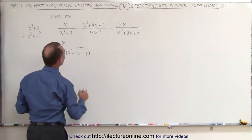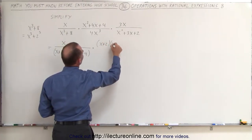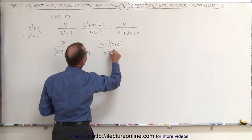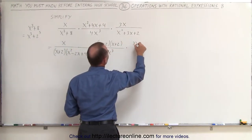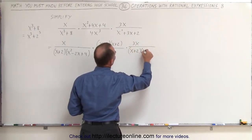Next, we have to simplify the numerator, or at least factor the numerator. This can be written as x plus 2 times x plus 2, divided by 4x cubed. And finally, here we can see the denominator can also be factored. This is 3x divided by, that becomes x plus 2 times x plus 1.